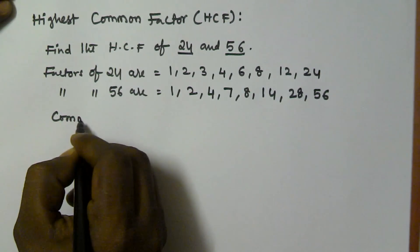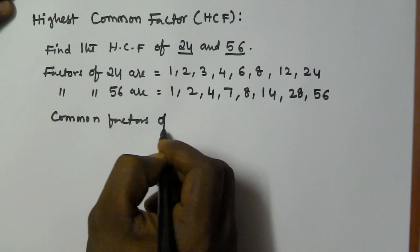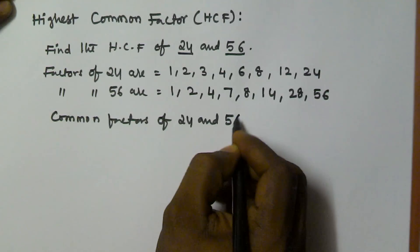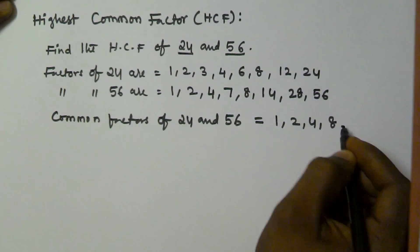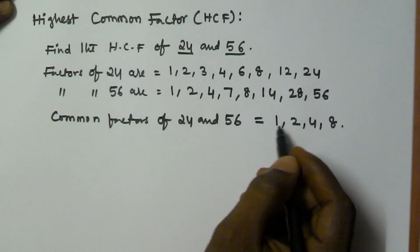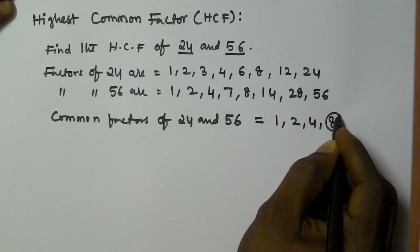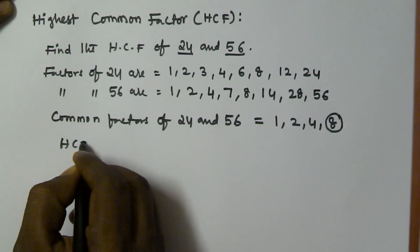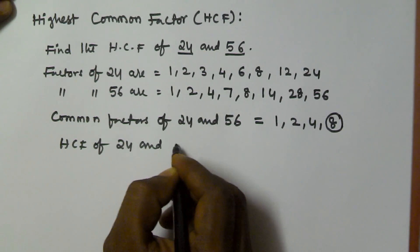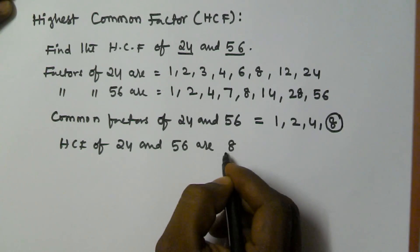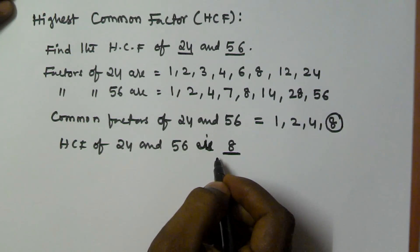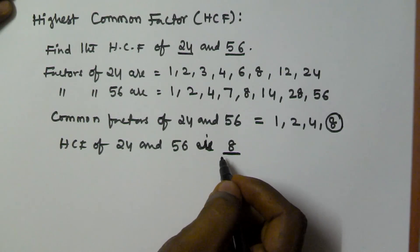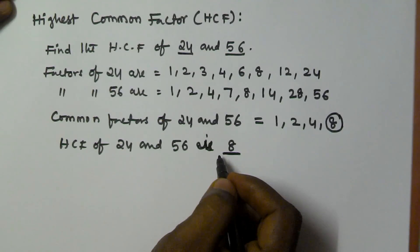Now we have to find the common factors of 24 and 56, which are 1, 2, 4, and 8. The highest among the common factors is 8, so the HCF of 24 and 56 is 8. The HCF is the highest common factor of two or more numbers which exactly divides each number.